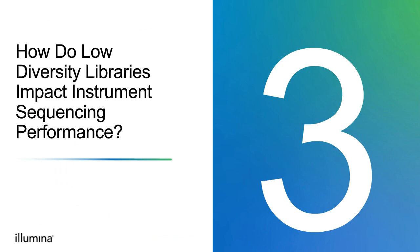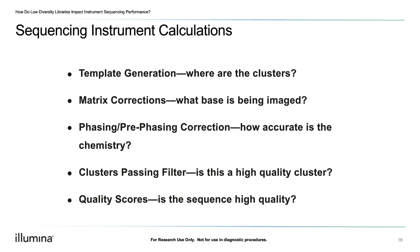Now that we have an idea of what nucleotide diversity is and how we can review it using sequencing run metrics, let's take a closer look at how nucleotide diversity actually impacts sequencing run performance on Illumina instruments. During the sequencing run, the instrument will collect data from each of the clusters and use this data to perform a variety of calculations, including template generation, matrix correction, phasing and pre-phasing correction, clusters passing filter, and the quality score.